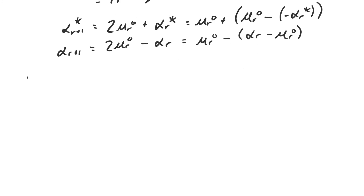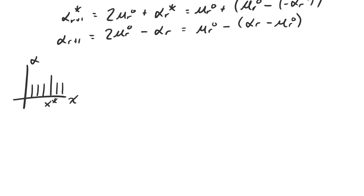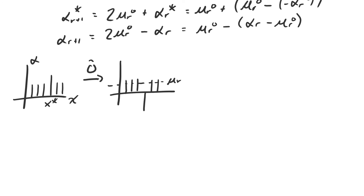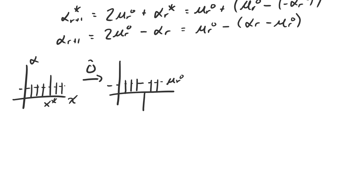It's easiest to see with a plot of the amplitudes — x on the x-axis and the coefficient on the y-axis. Initially all basis vectors aside from x-star have the same amplitude, and x-star has its own slightly larger amplitude. After applying the oracle, the coefficient in front of x-star is negated. The dotted line shows μ_r, the average coefficient, which is slightly less than α_r due to the negative contribution from x-star.